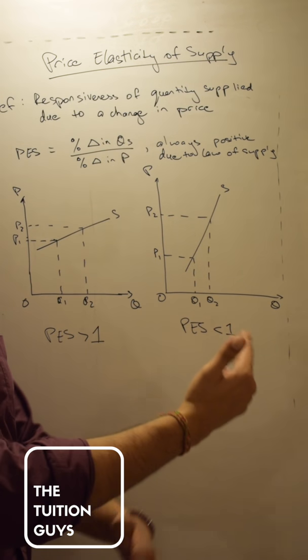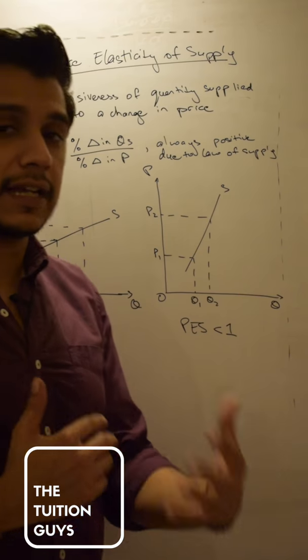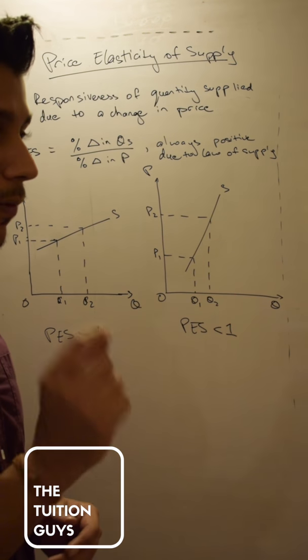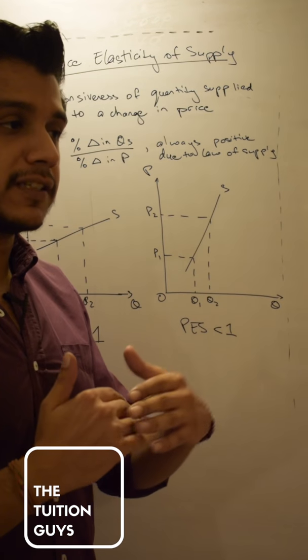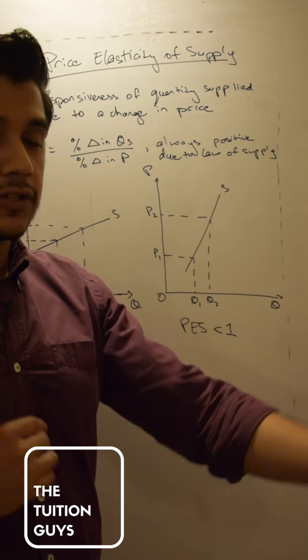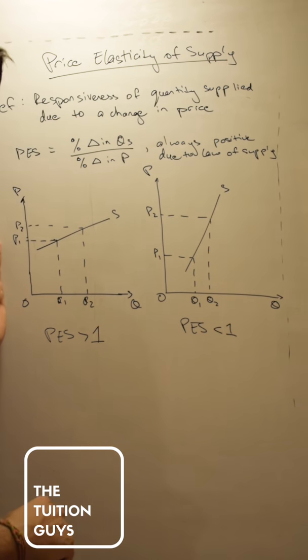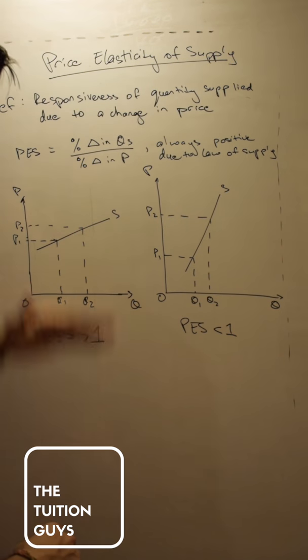How do you show that there's something known as price elastic supply or price inelastic supply? First, price elastic supply is that due to a small change in the price, quantity supplied is changing by a larger percentage, or by a larger rate. That is shown over here in the first diagram, which is a slightly flatter supply curve.